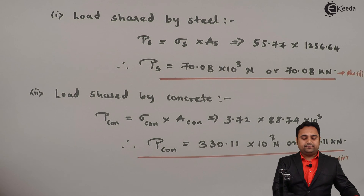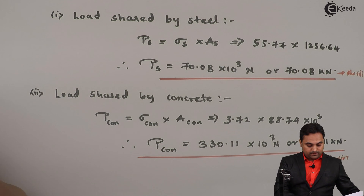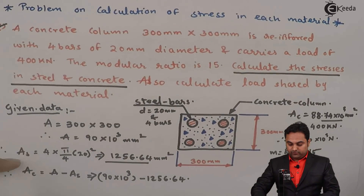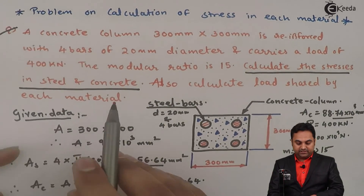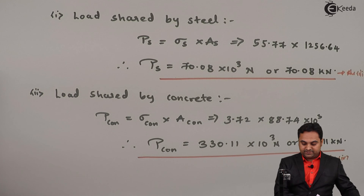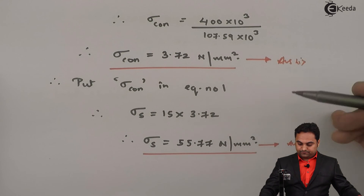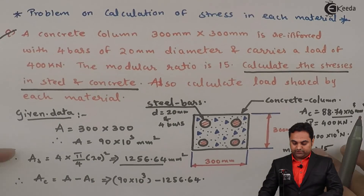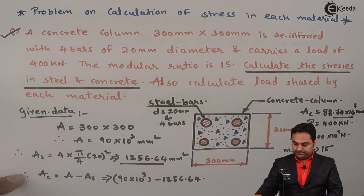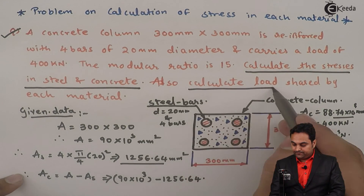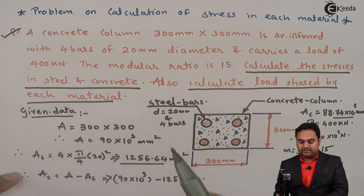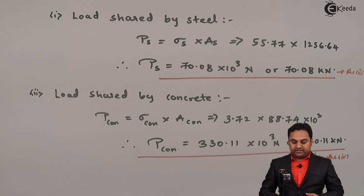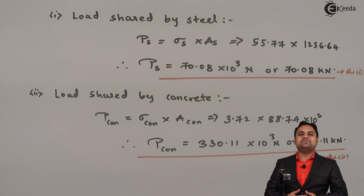So in this problem we were asked to calculate four unknown values: first, the stresses in steel and concrete — which we have found — and next, the loads shed by steel and concrete — which we have also found. With this, we complete the question.